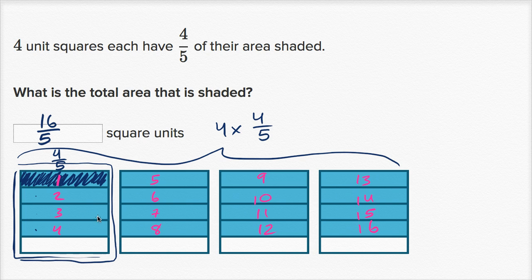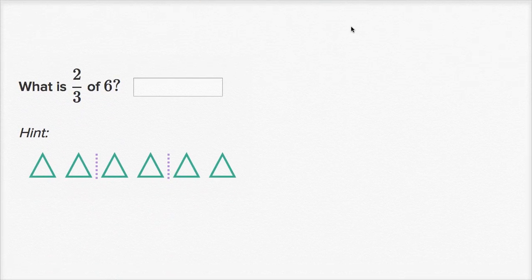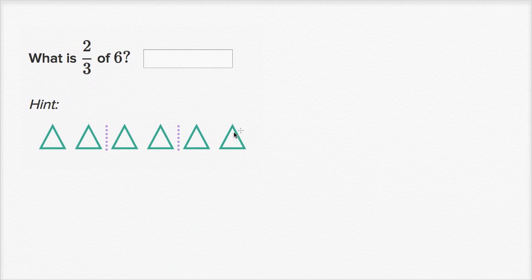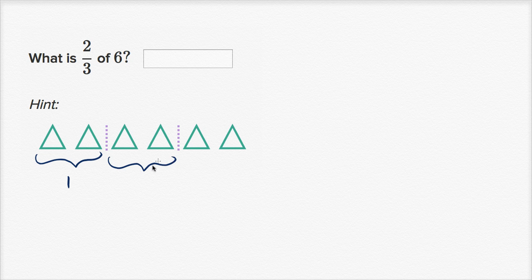So the total area that is shaded is sixteen-fifths square units, where a whole would be one square unit, but we have sixteen-fifths of the square units actually shaded in. Let's do another example. What is two-thirds of six? We have six triangles here, and you can see they've divided into thirds — three equal groups. That's one equal group, that is two equal groups, and that is three equal groups. So each of these thirds is one-third of six.